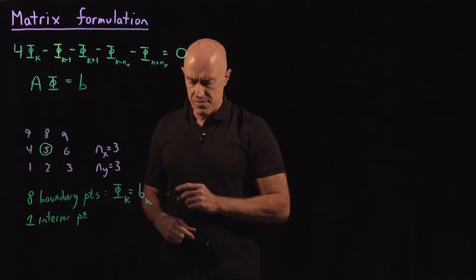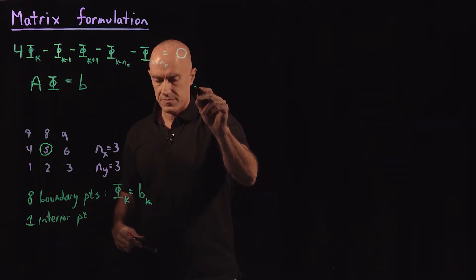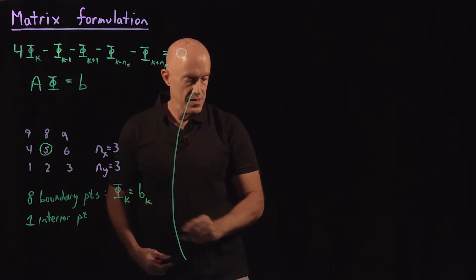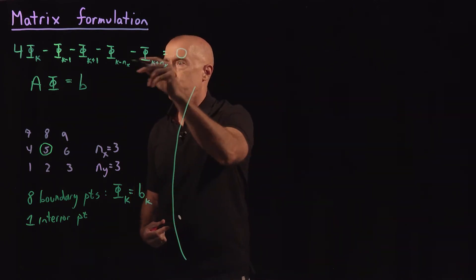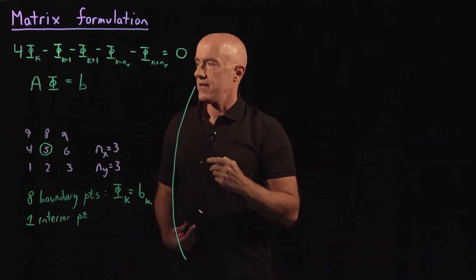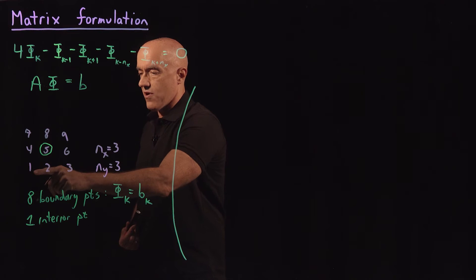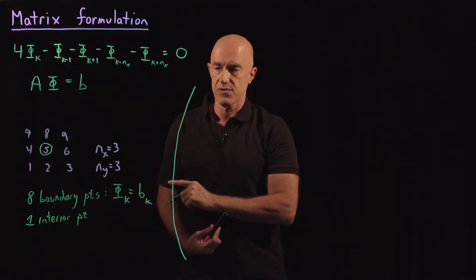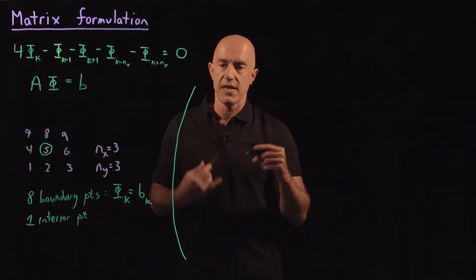So let's write down the matrix equation for this. We need a very big matrix here. The first row of the matrix corresponds to k equals one, the second row will be k equals two, and so on. For the first row, k equals one, that corresponds to the equation for phi one, but phi one is equal to b one. So in the first row of this matrix, we're going to put the first row of the identity matrix.